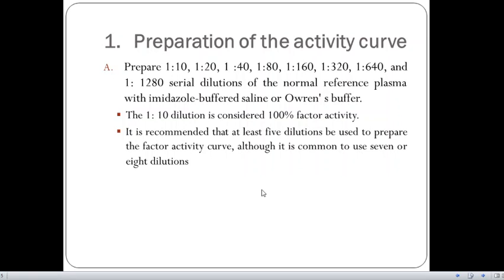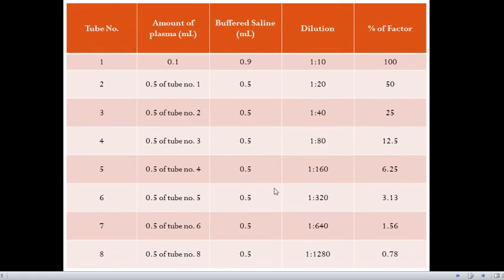Although, it is common to use 7 to 8 dilutions. Suppose these are tubes 1, 2, 3, 4, 5, 6, 7, and 8. For tube 1, amount of plasma that you put is 0.1 and then buffered saline 0.9, dilution 1 is to 10, and then percentage of the factor is 100. Taking from tube 1 till 8, you will do serial dilutions as it is mentioned in this table.